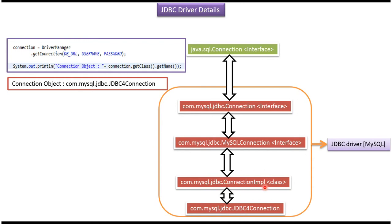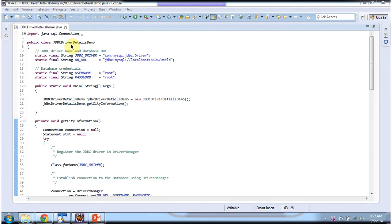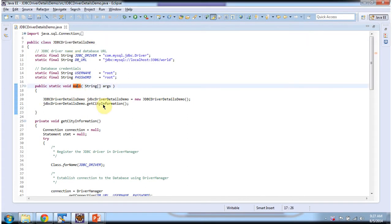JDBC4Connection extends ConnectionImpl class, and ConnectionImpl class implements the MySQLConnection interface. MySQLConnection interface extends the Connection interface, and that belongs to the com.mysql.jdbc package. This Connection interface extends java.sql.Connection interface. The class JDBCDriverDetailsDemo has the main method.